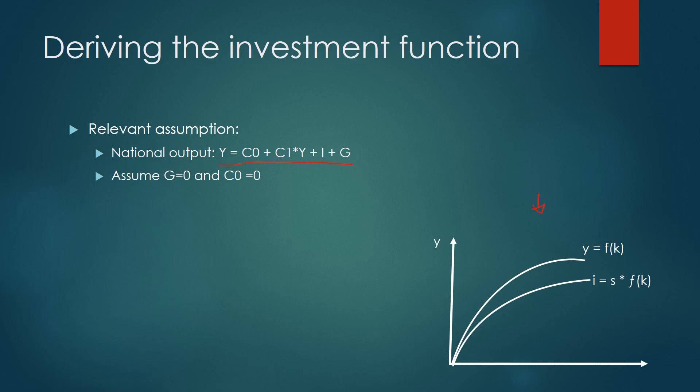And that's just a simple model of aggregate demand that you should have learned in your macroeconomic courses before. We're going to assume also that government spending is equal to zero and consumption that isn't dependent on income is also zero.